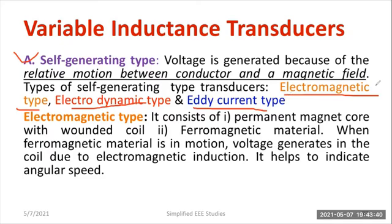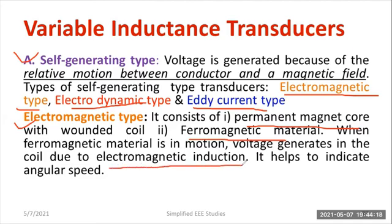I would like to speak about electromagnetic type self-generating transducer. Basically, it has two components. The first one is a permanent magnetic core with a suitable amount of coil. The second is a ferromagnetic material, where the moving body will be connected to the ferromagnetic material. Whenever the moving body is connected to ferromagnetic material, the magnetic field will be getting changed. When the ferromagnetic material is in motion, the voltage induced in the coil is due to electromagnetic induction.